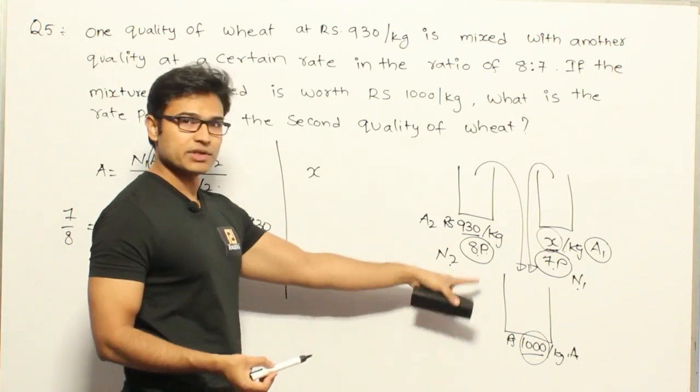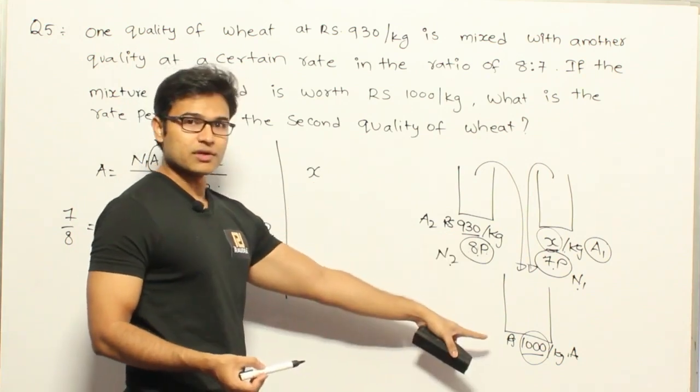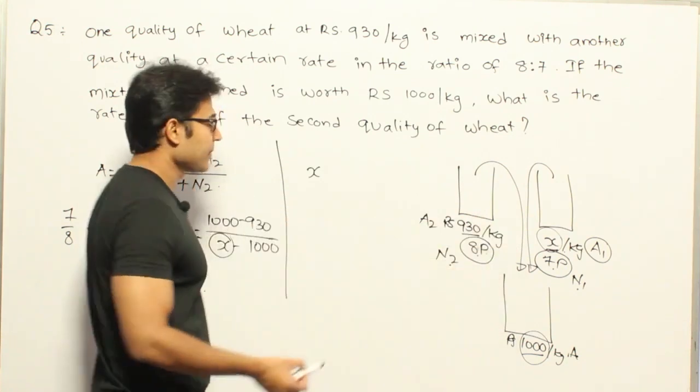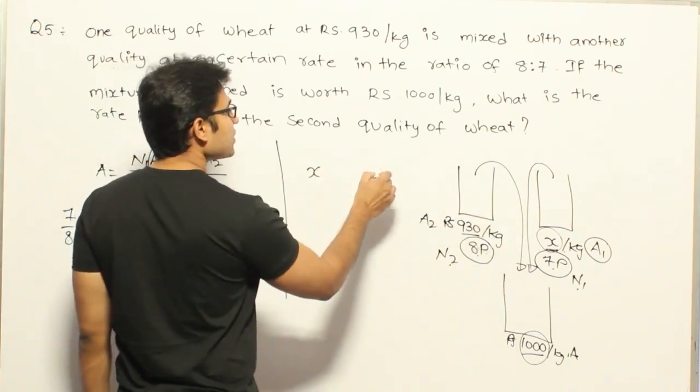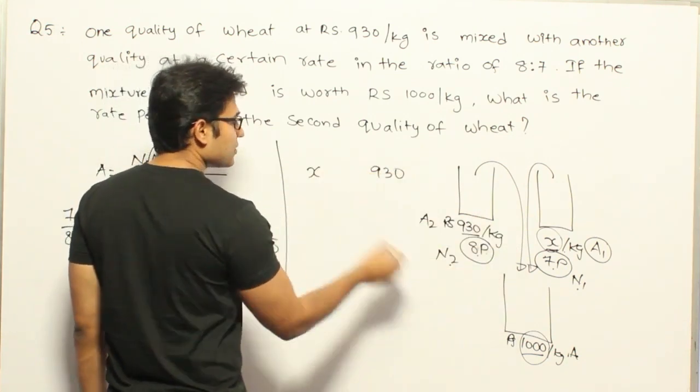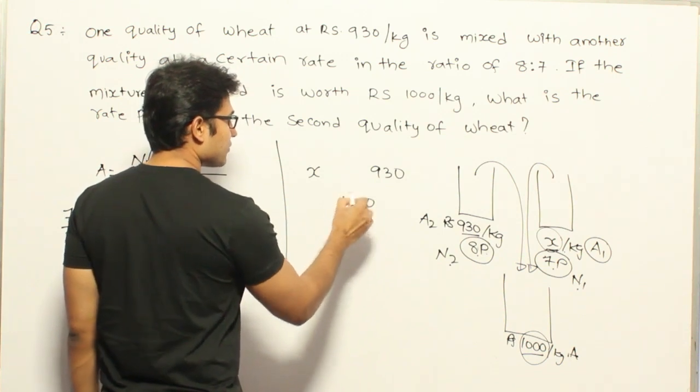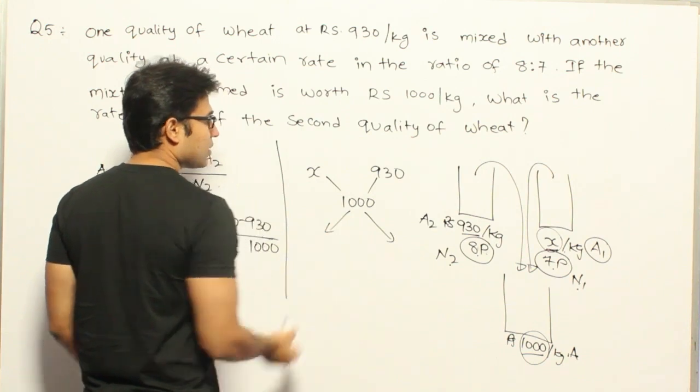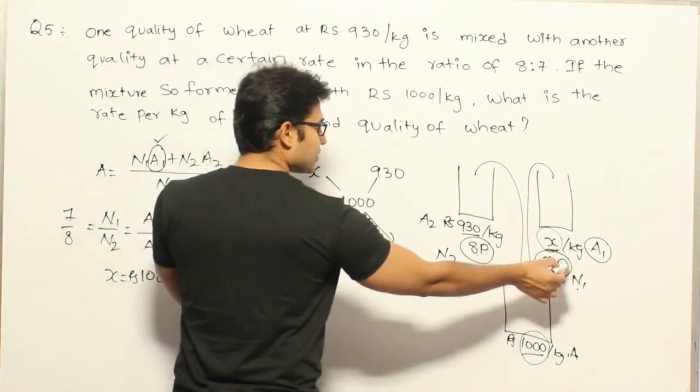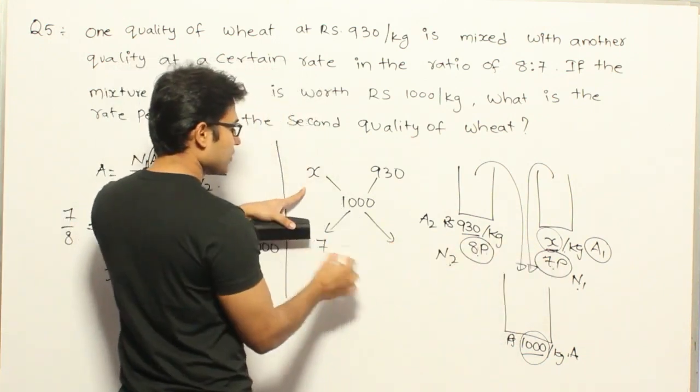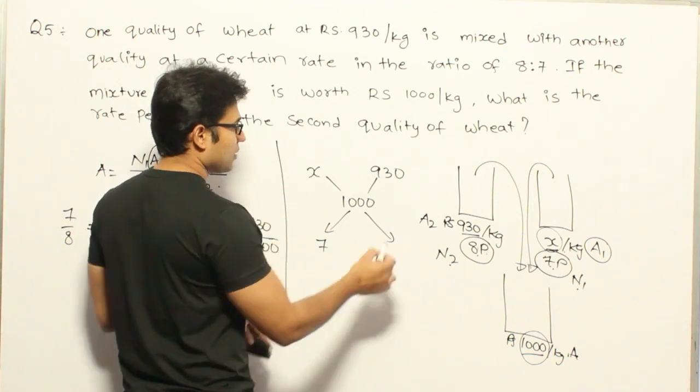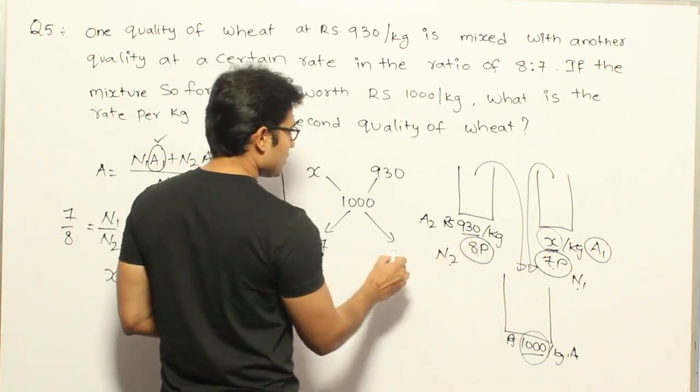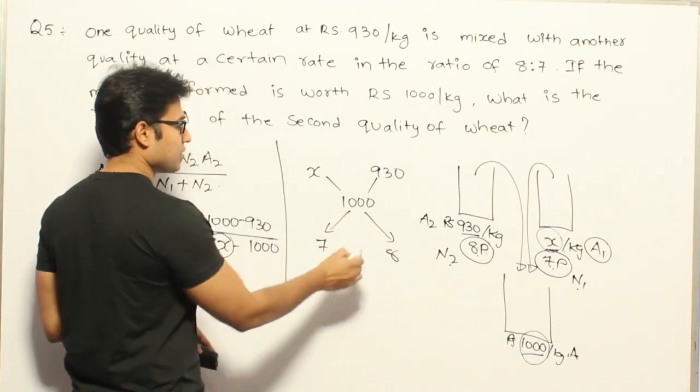Why? This is true, isn't it? If your final average is going to increase, then definitely the other average must be higher. Now X, and what is the other one? 930, and this one is 1000, right? And the value associated with X is 7, so this side it is 7, right? And this side it is 8.